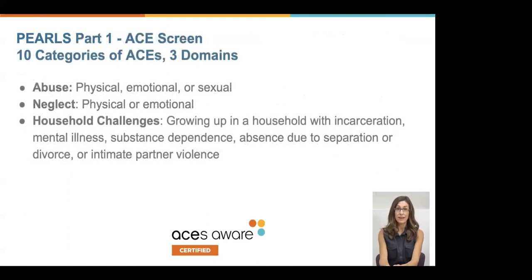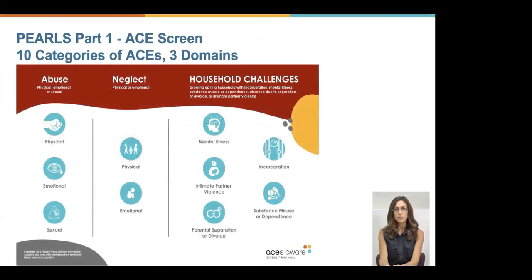The PEARLS Part 1, the ACE screen, includes 10 categories of ACEs in three domains: abuse, neglect, and household challenges. This image, courtesy of the Robert Wood Johnson Foundation, is another way to visualize the three domains. Within abuse there are three areas: physical, emotional, or sexual abuse. Within neglect: physical or emotional neglect. And household challenges include things like growing up in a household with parental incarceration, mental illness, substance dependence, or absence due to parental separation or divorce, or intimate partner violence.